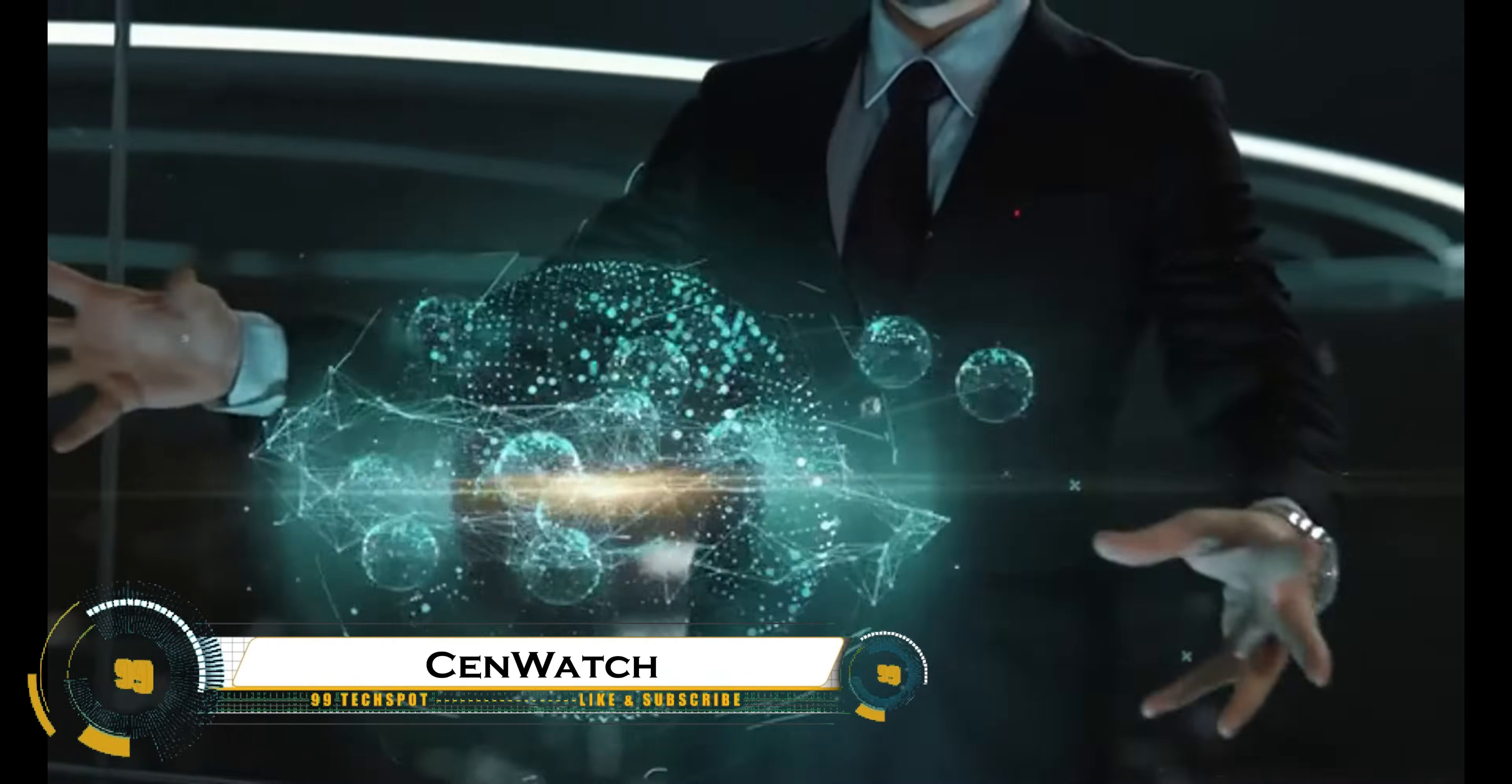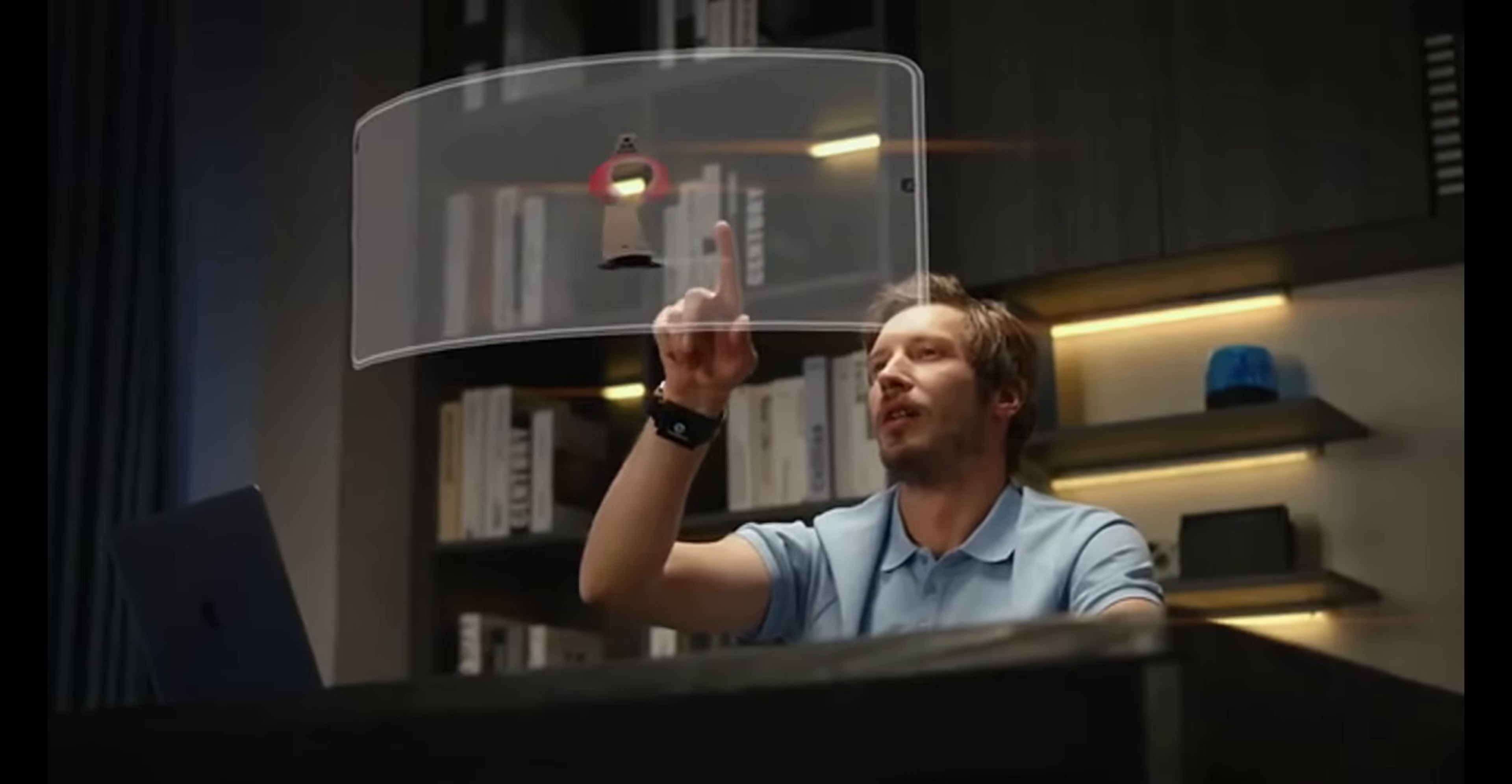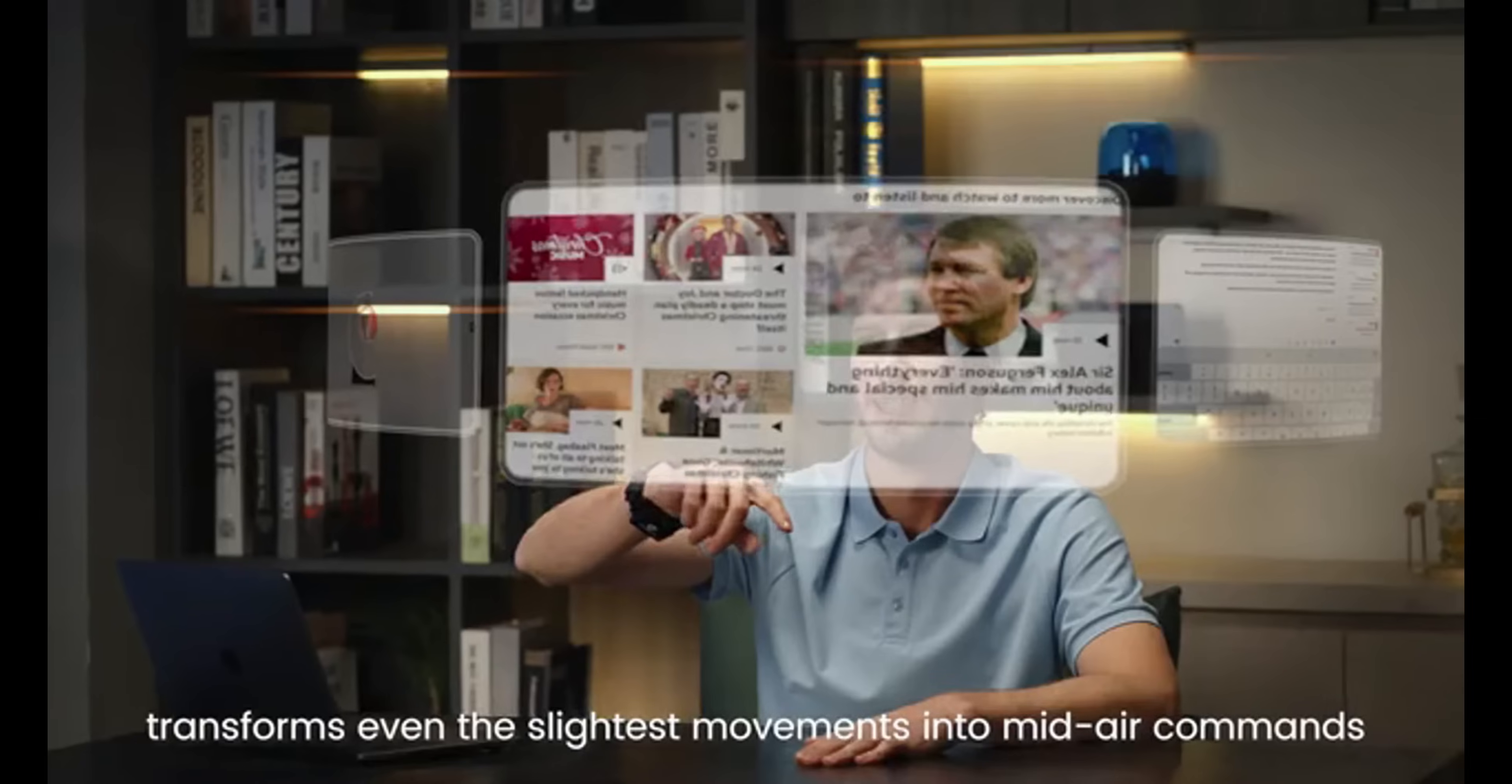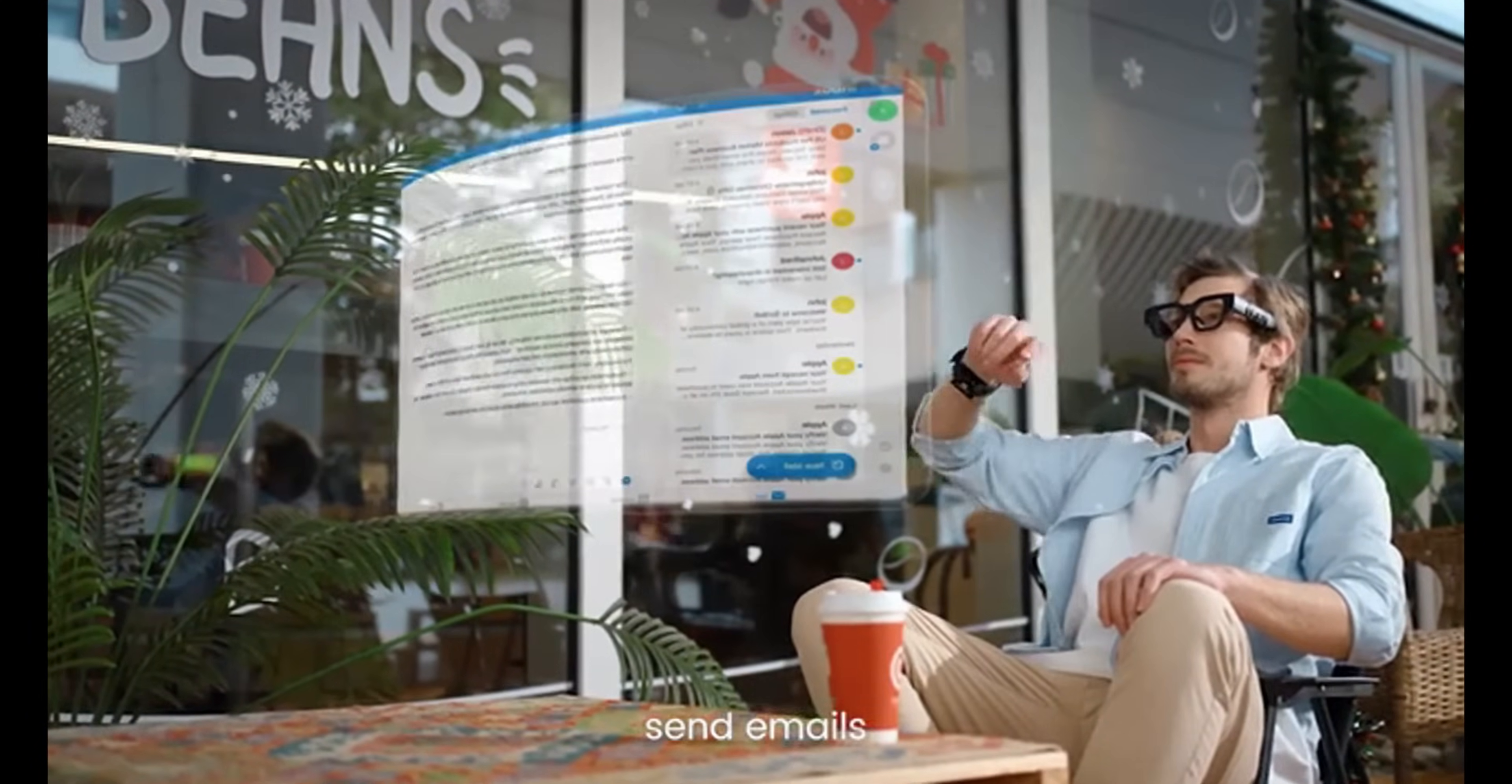The Senwatch is a groundbreaking gesture-controlled system that lets you effortlessly control multiple screens with just a wave of your hand. Using AI-powered motion tracking and advanced sensors, this futuristic device eliminates the need for traditional input devices like keyboards, mice, or remotes. Whether you're a professional managing data across multiple monitors, a gamer switching between screens, or a home user navigating entertainment setups, Senwatch offers seamless, intuitive control.